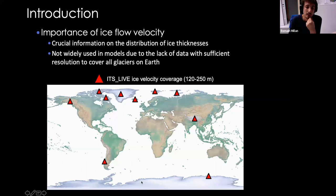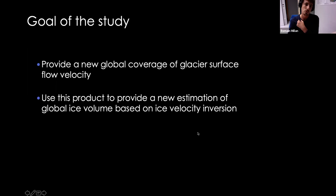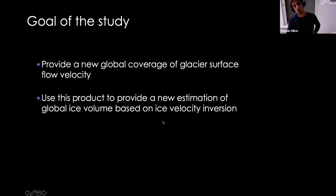Here is a coverage map of the ITS_LIVE dataset, and you can see that there are still big regions missing — for example, glaciers in the Andes, the Alps, Caucasus, and New Zealand. Also, those data are provided at a sampling resolution of 120 to 250 meters, which can be a limitation for small valley glaciers in the Andes. The goal of this project is to provide a new global coverage of glacier surface flow velocity at a resolution sufficient for glacier modeling and the study of ice dynamics, and to use this new product to provide a new estimation of global ice volume based on ice velocity inversion.